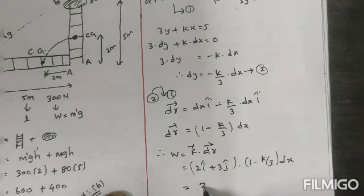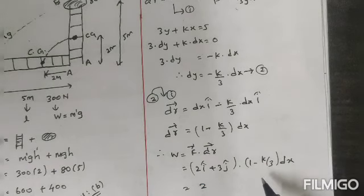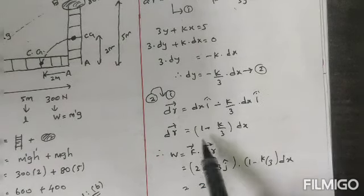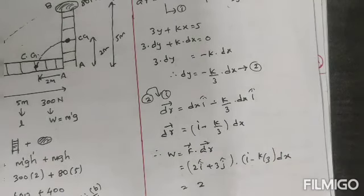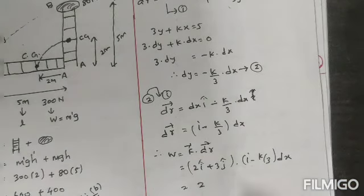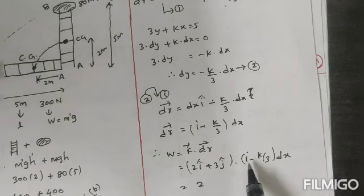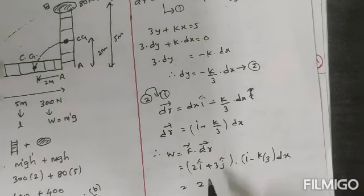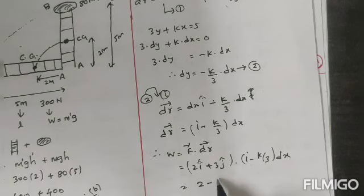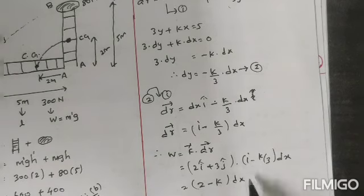Now we can write 2 into 1. Here i is there, here i is there, so 2 into i, i into i square, that value is 1, so 2 is there. Then 3 into minus k by 3, that is minus k alone. 3 and 3 will be canceled.